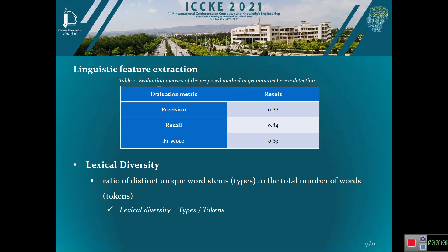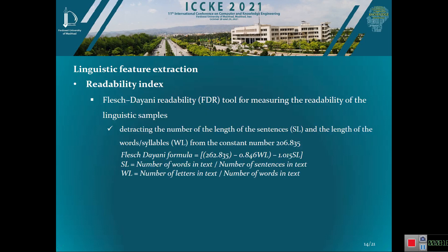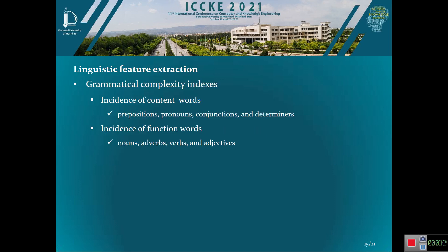After that, the system calculates other linguistic features based on defined formulas. Lexical diversity is the ratio of distinct unique word types to the total number of words — that is, the ratio of types to tokens. A readability index is calculated based on the Flesch readability formula. Grammatical complexity index is based on the incidence of function words such as prepositions, pronouns, conjunctions, and determiners, and the incidence of content words such as nouns, adverbs, verbs, and adjectives.